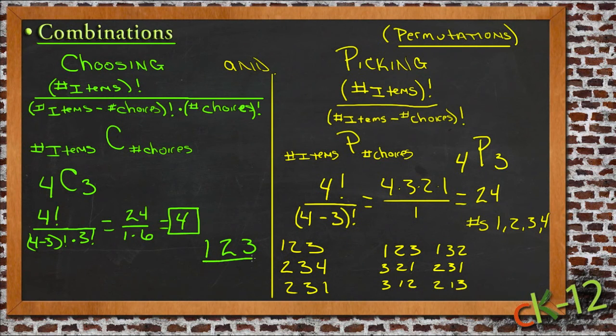For every single combination in this example, we had 6 permutations. What we had to do was take the total number of permutations, which was 24, and divide it by the total number of permutations possible per set, or per group of numbers we picked.